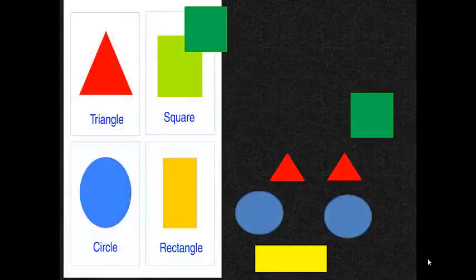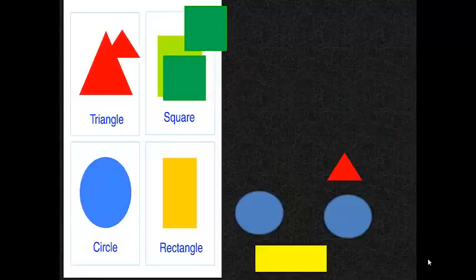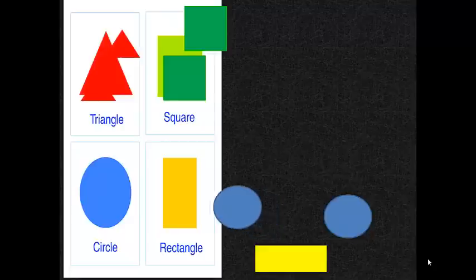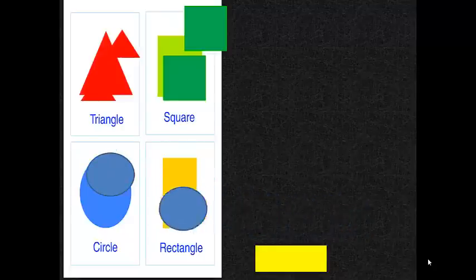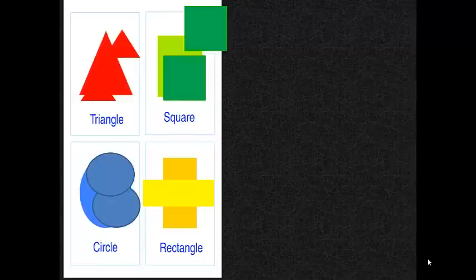The squares go with squares. The triangles go with the triangles. The circles go with the circles. And the rectangles go with the rectangles. Now you've just sorted by shapes.